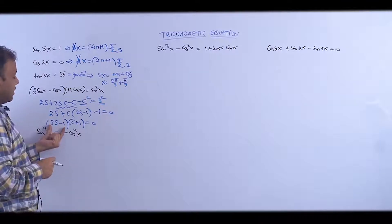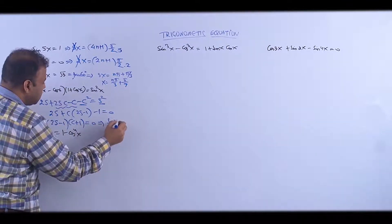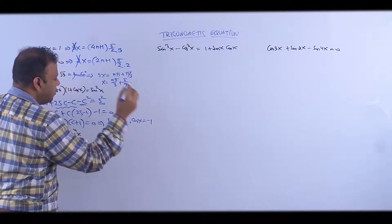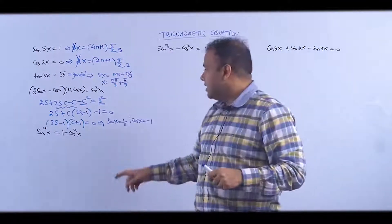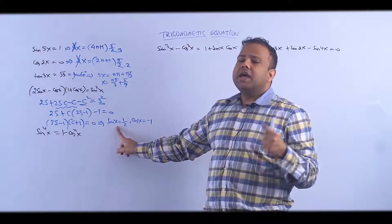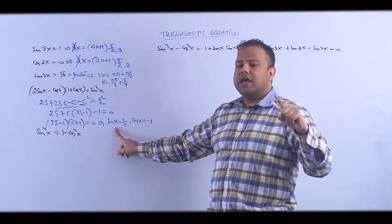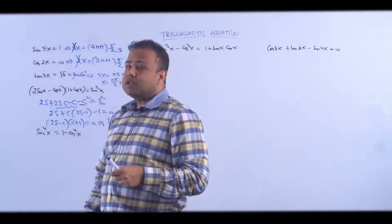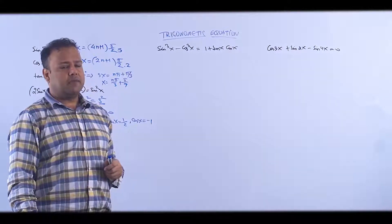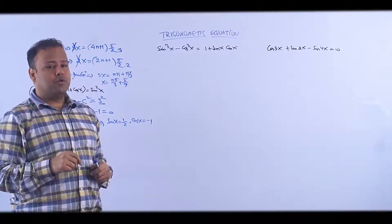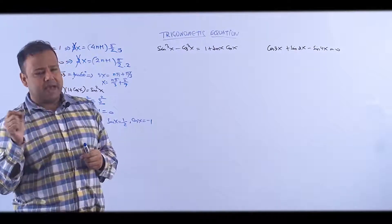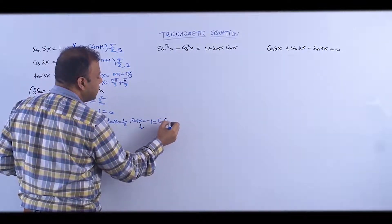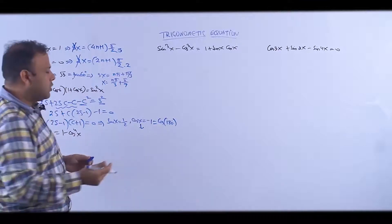This means either this factor = 0 or that factor = 0. So sin(x) = 1/2 or cos(x) = -1. sin ka value 1/2 gives x = nπ + (-1)ⁿ π/6. cos = -1 happens at 180°, which is odd multiples of π, i.e., cos π.